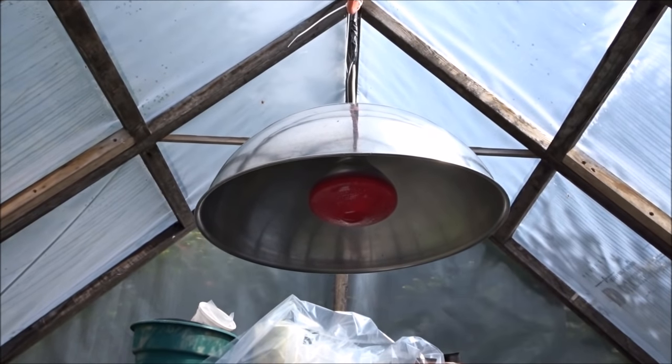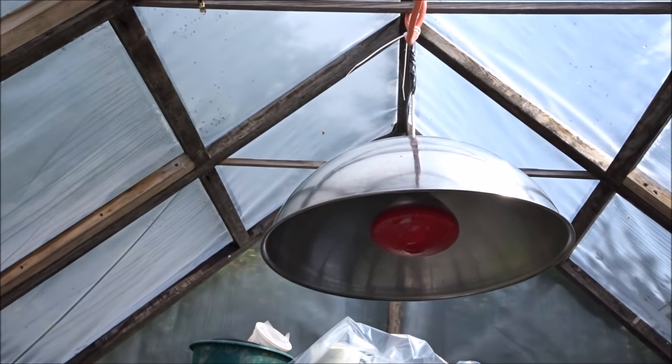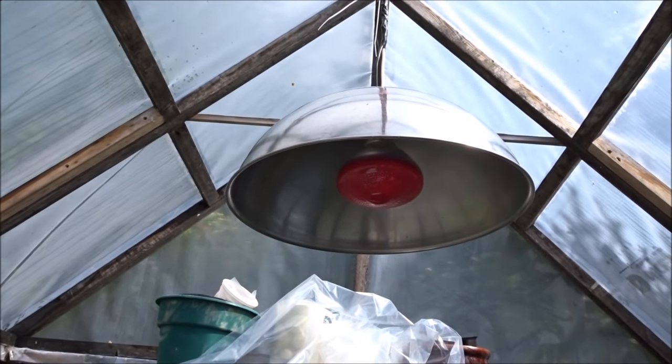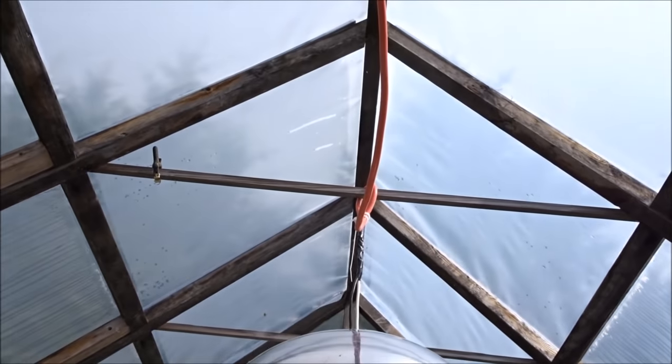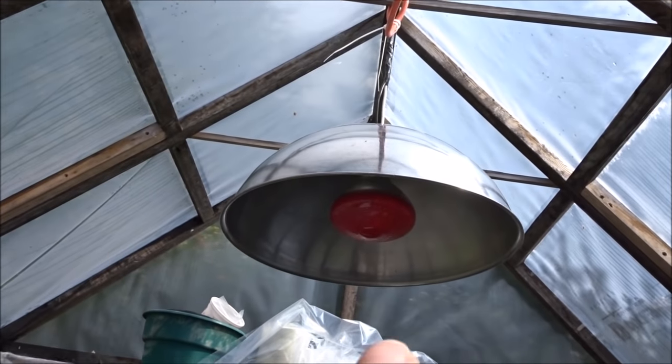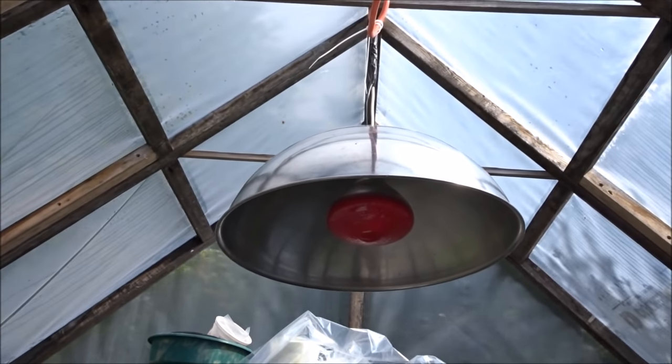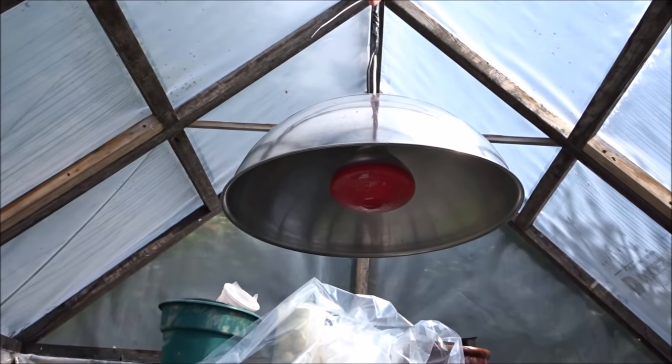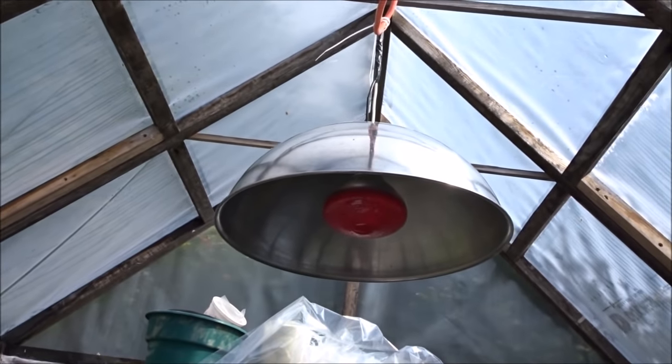It's quite easy. Get yourself a super large mixing bowl at the dollar store, a pigtail, and some wire. Just put a hole in to match the pigtail, put your light fixture through, and it's ready to go. If you do have chickens, you can just wrap it in some chicken wire.